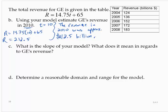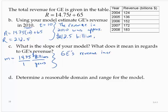What is the slope of the model? What does it mean in regards to GE's revenue? So the slope, m, is 14.75. And if we think of that as 14.75 over 1, and then, like usual, put in the units. 14.75, well, that was in billions of dollars. And the one was in terms of years. So what that tells us is that GE's revenue increased by about $14.75 billion per year.